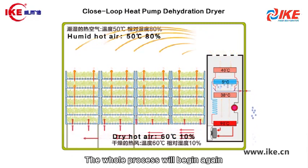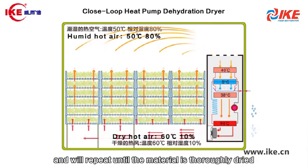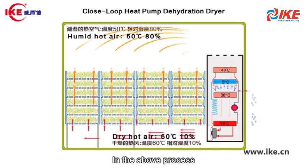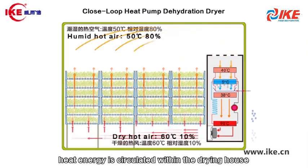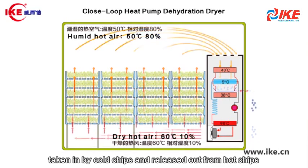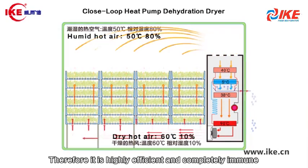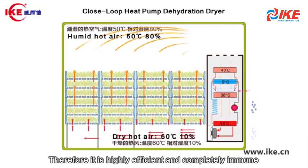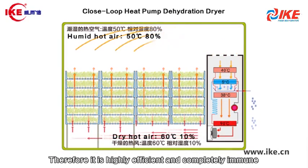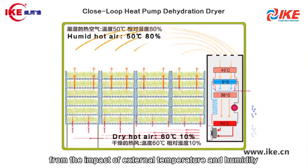The whole process will begin again and will repeat until the material is thoroughly dried. In the above process, heat energy is circulated within the drying house, taken in by cold chips and released out from hot chips without any loss of heat. Therefore, it is highly efficient and completely immune from the impact of external temperature and humidity.